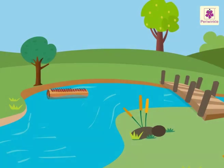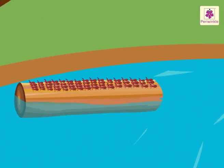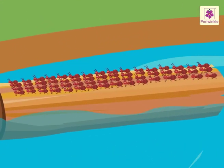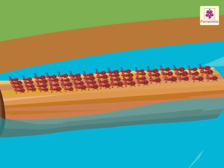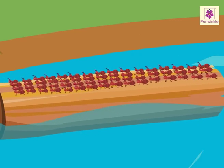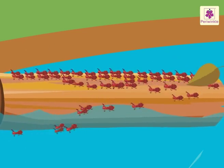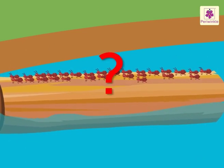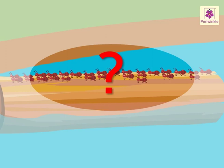Let us begin with one such story. There are 59 ants on a log of wood in a river. 31 ants fell in the river. How many ants are left on the log of wood?